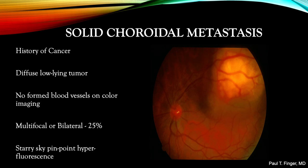This metastatic lung cancer presented without a known primary. However, total body PET-CT revealed multi-organ metastasis and allowed for a bronchoscopy-enabled histopathologic diagnosis. The tumor is slightly taller than the other cases, but still relatively low-lying. There are no visible formed blood vessels on its surface. Both eyes should be carefully examined and photographed, as these tumors can be multifocal and bilateral.